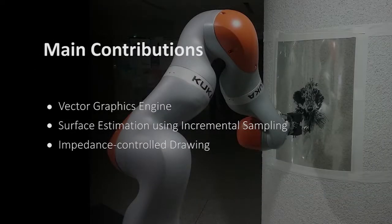We present our robotic drawing system that reproduces digital drawings on a physical surface without any explicit surface reconstruction nor visual feedback.